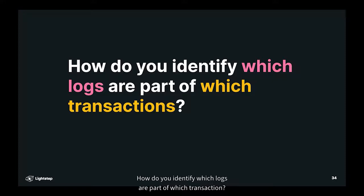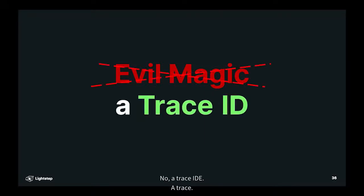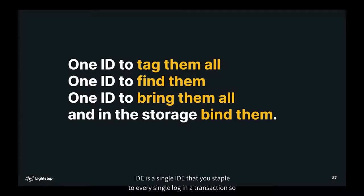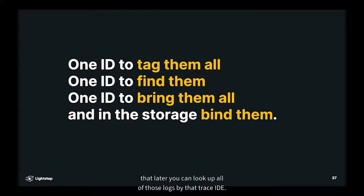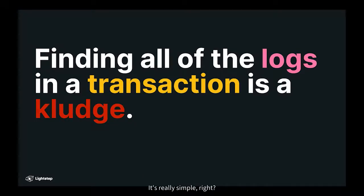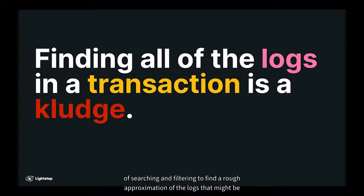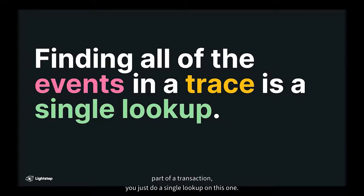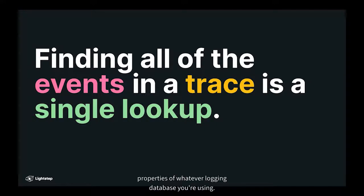How do you solve this problem? How do you identify which logs are part of which transaction? Not evil magic — a trace ID. A trace ID is a single ID that you staple to every single log in a transaction, so that later you can look up all of those logs by that trace ID. Instead of having this kludgy process of searching and filtering to find a rough approximation of the logs that might be part of a transaction, you just do a single lookup on this one trace ID. This is fundamentally simpler, and it allows you to leverage the indexing properties of whatever logging database you're using.